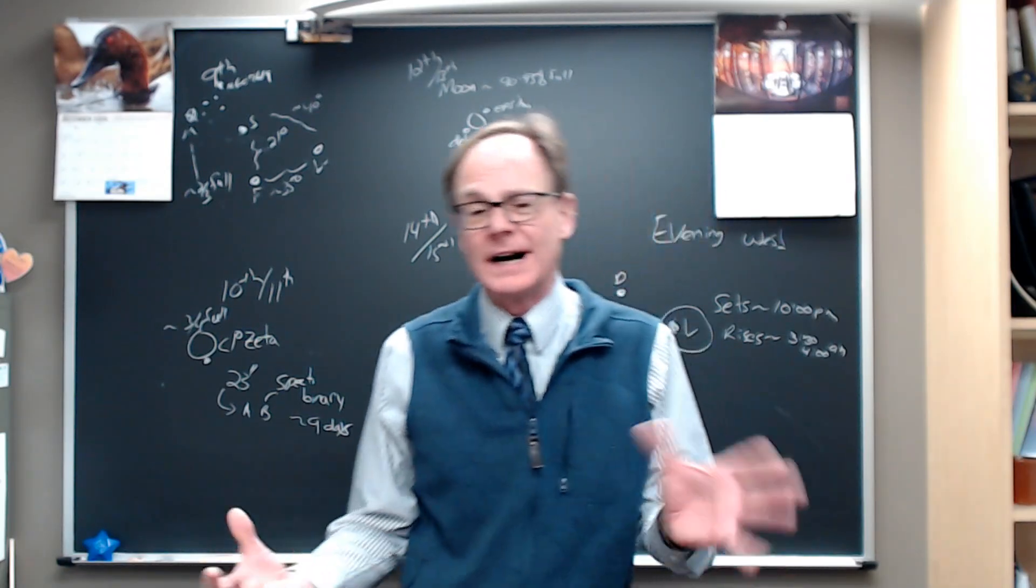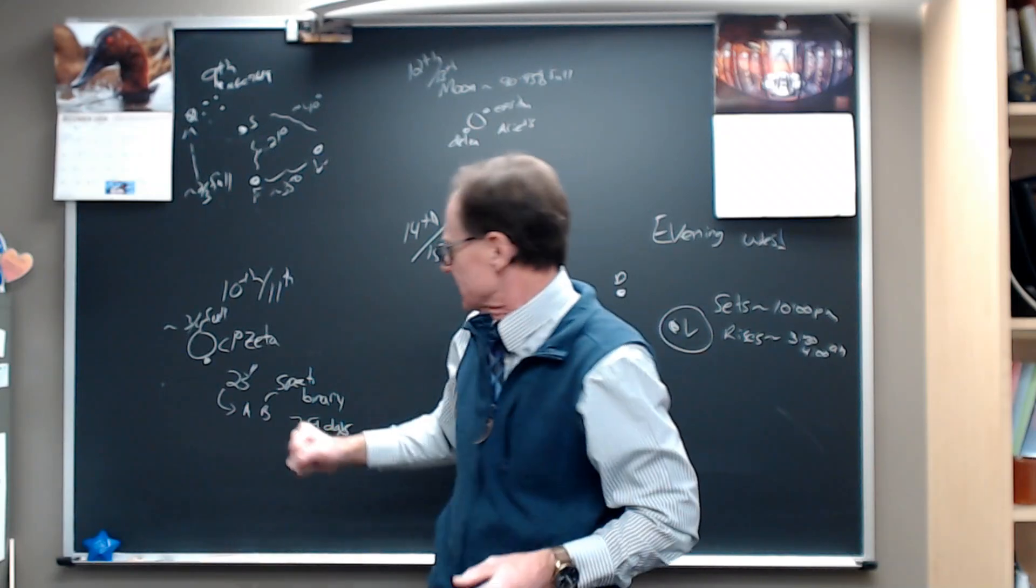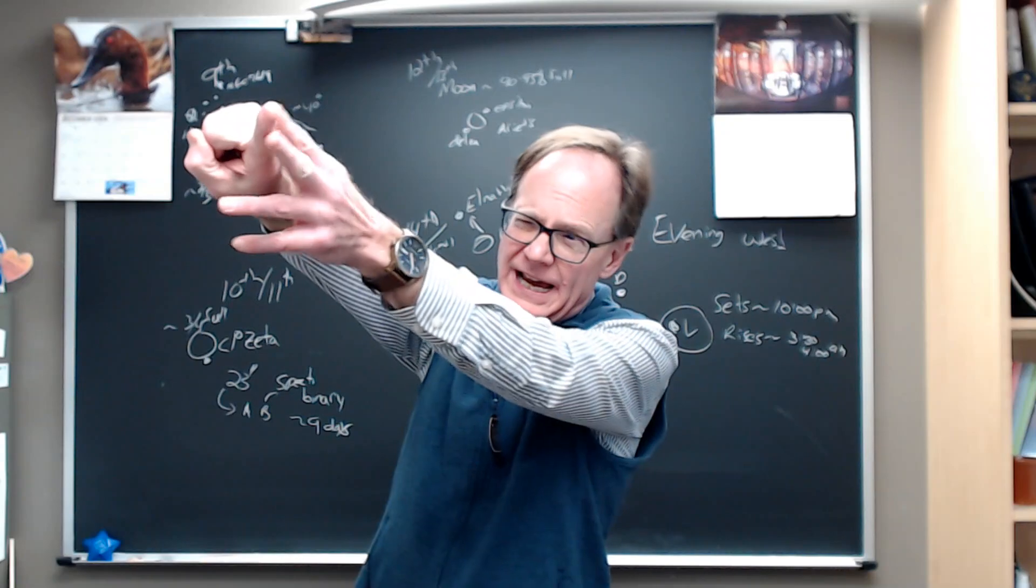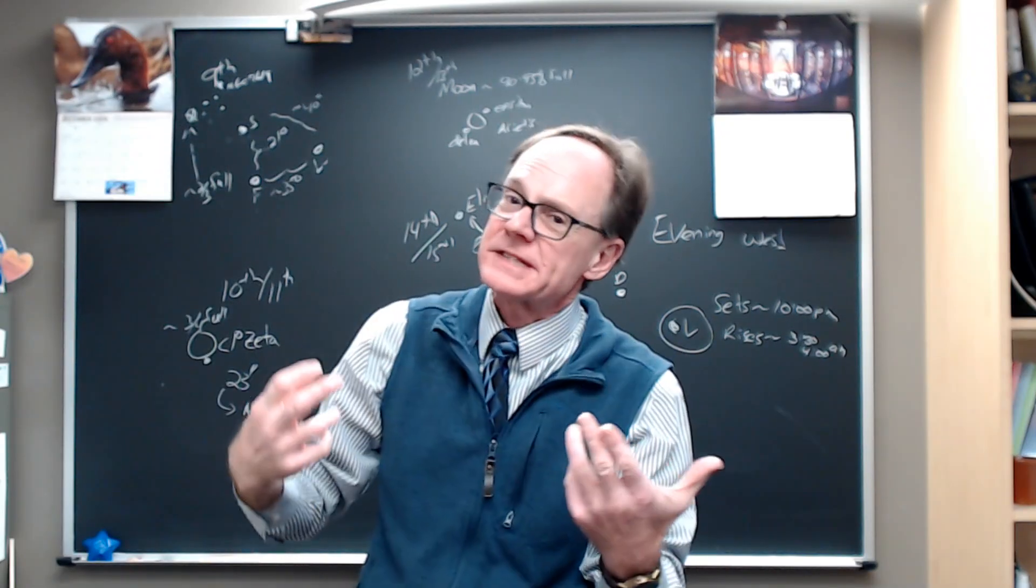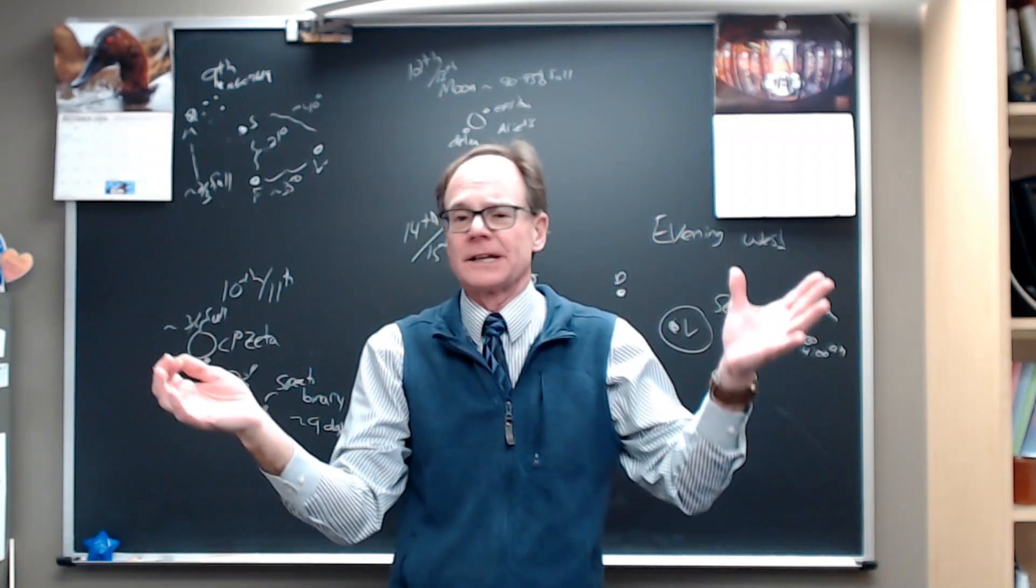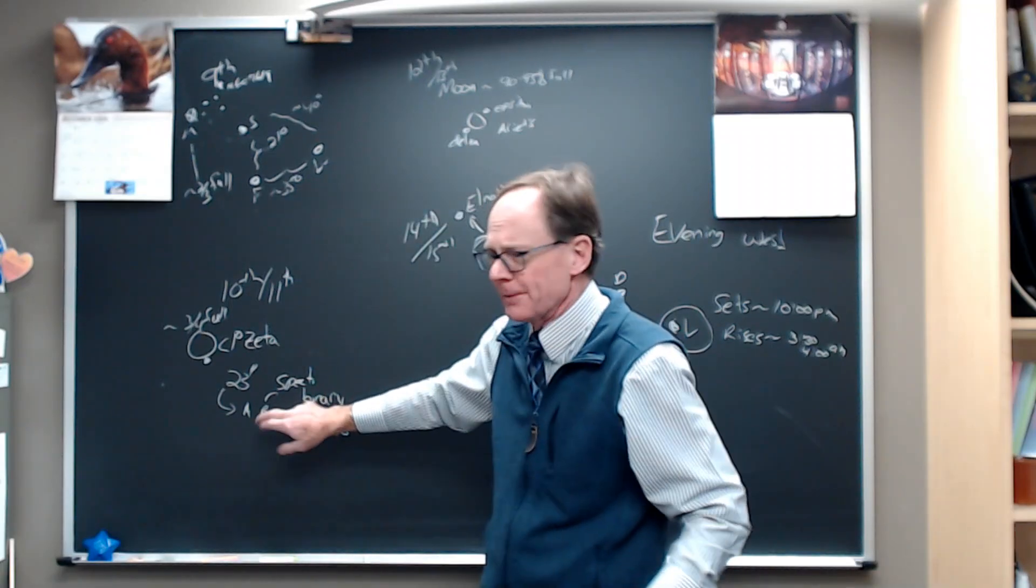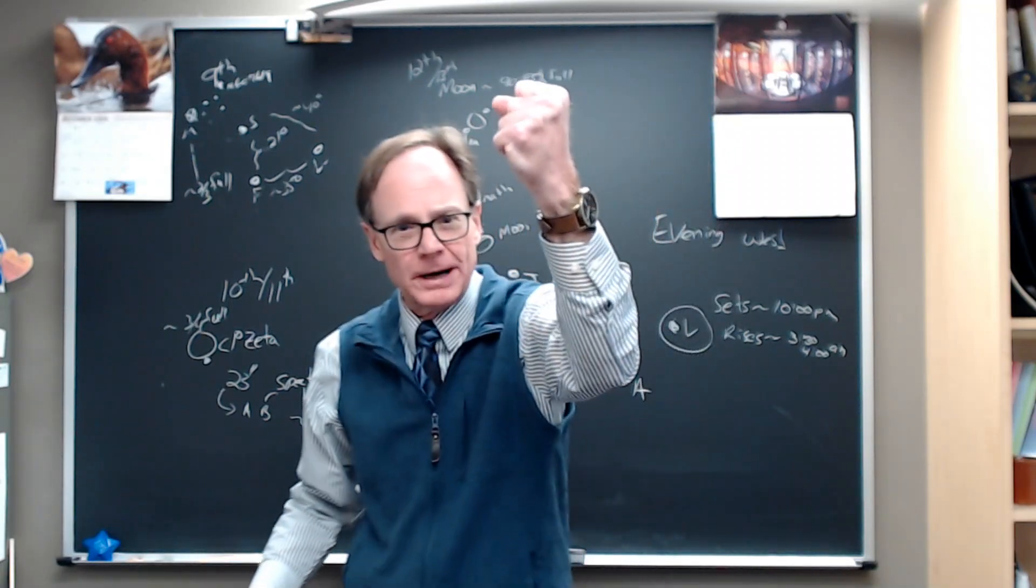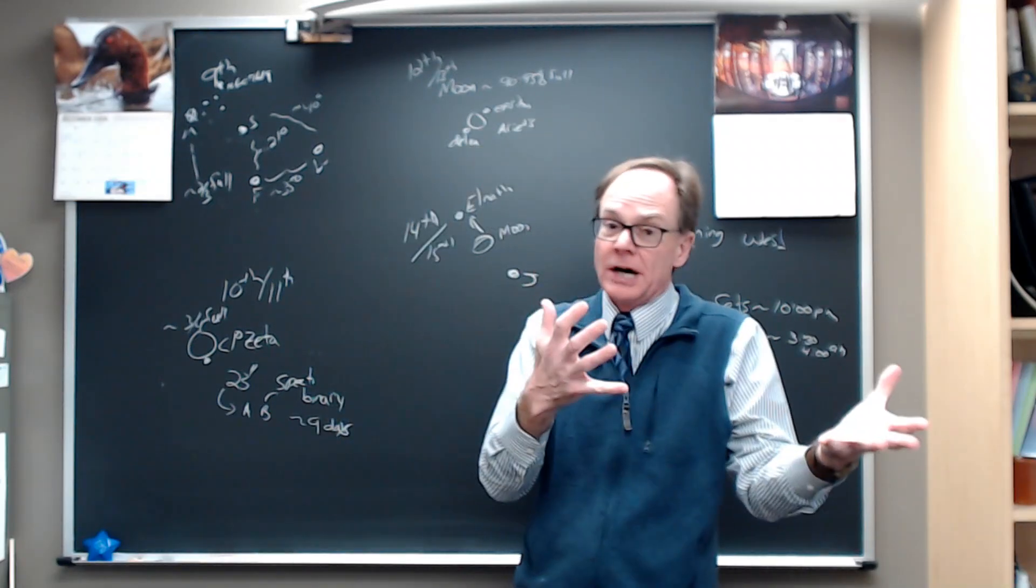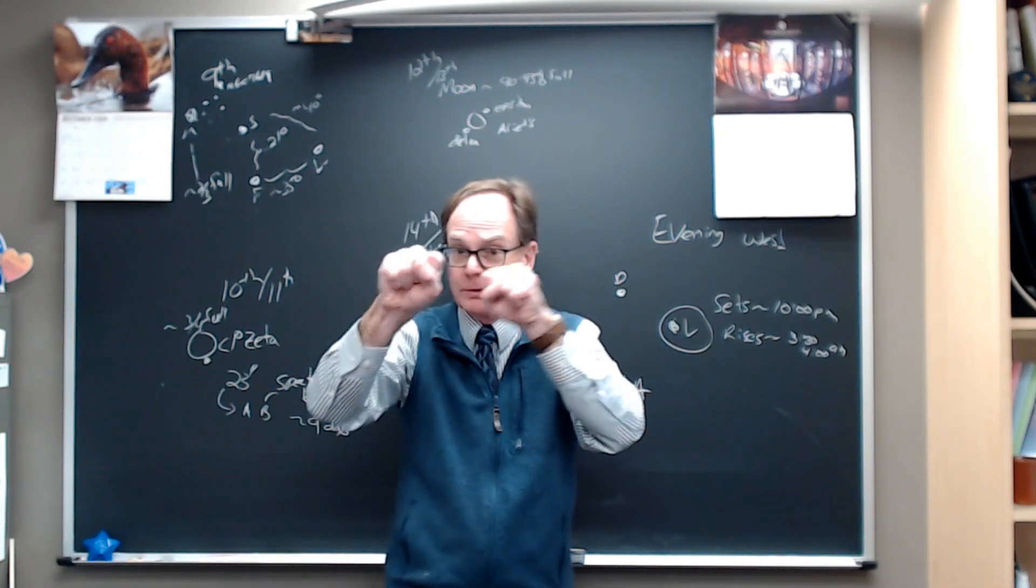Zeta's a fine, fine, fine binary star. A fine double star for a small telescope. So they're separated by 23 arc seconds. A degree is 60 arc minutes. And one arc minute is 60 arc seconds. So it's a third of an arc minute is the separation of these stars. Any telescope's going to pull those apart. Whatever telescope you have, you'll be able to see this binary.